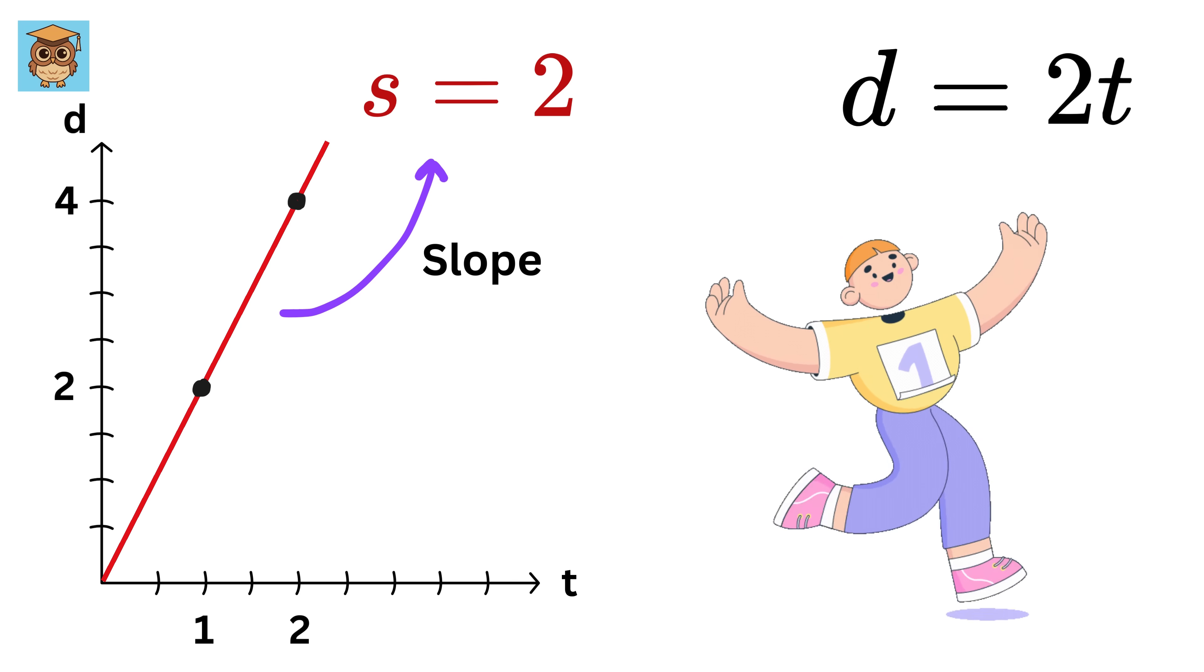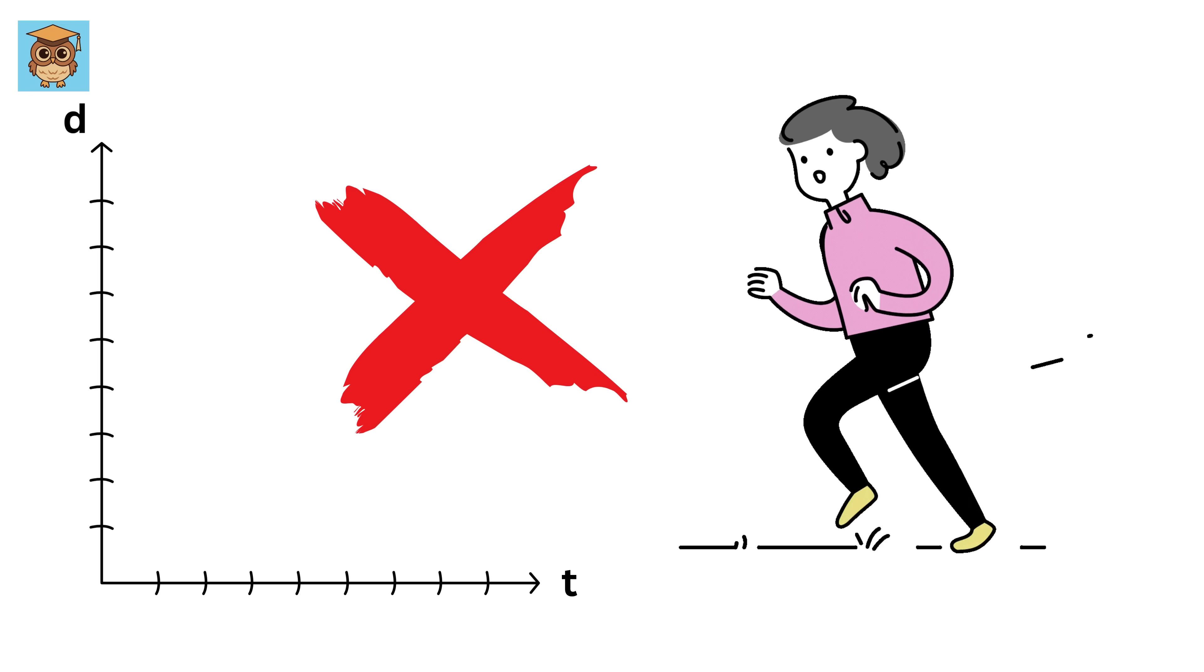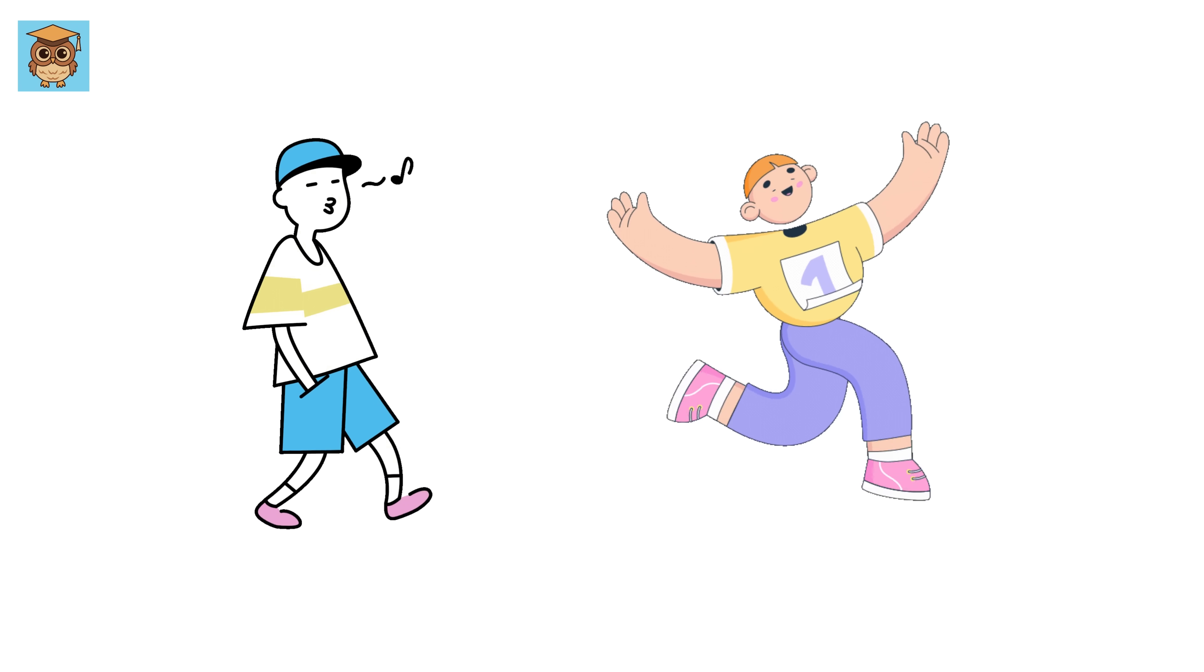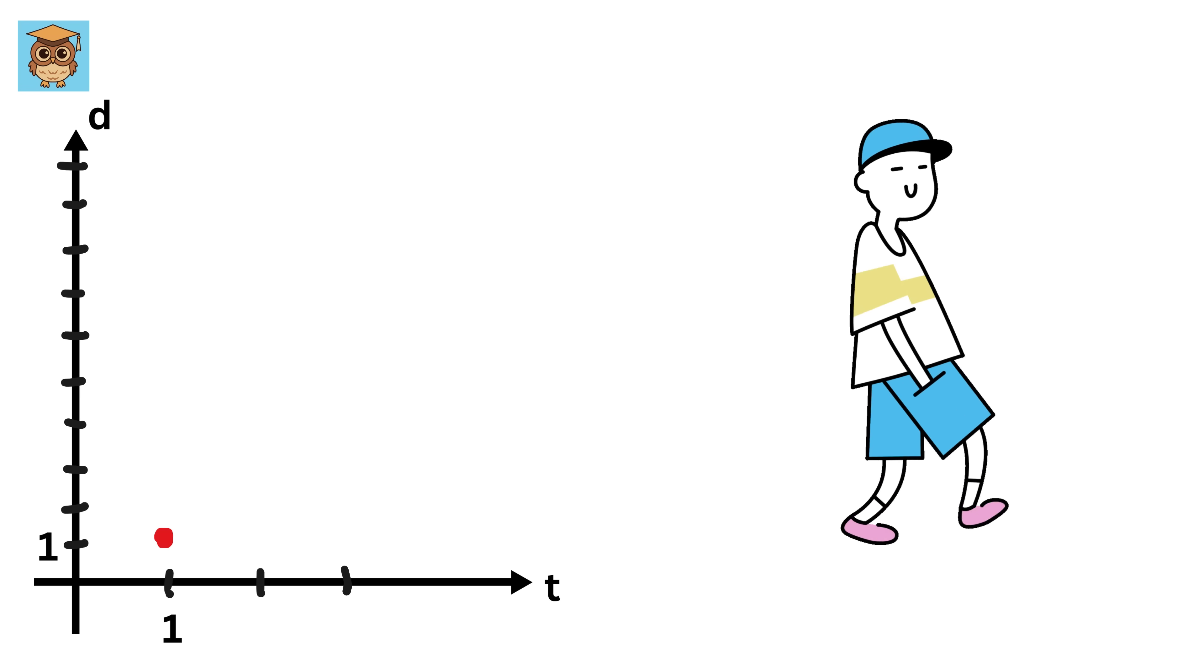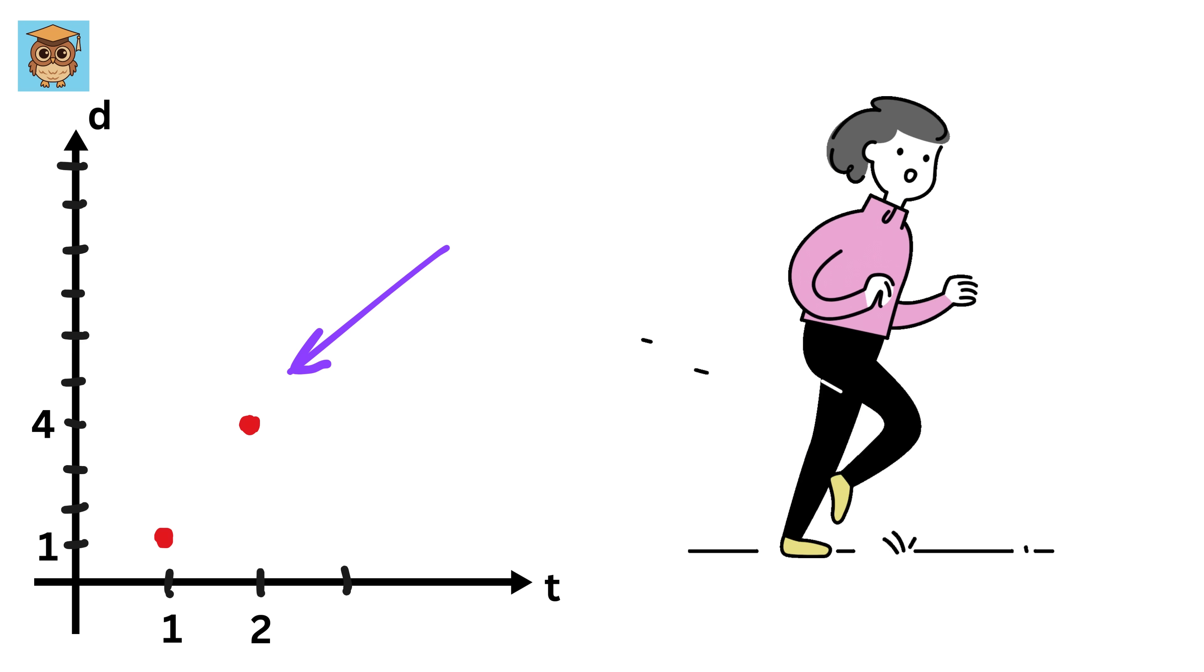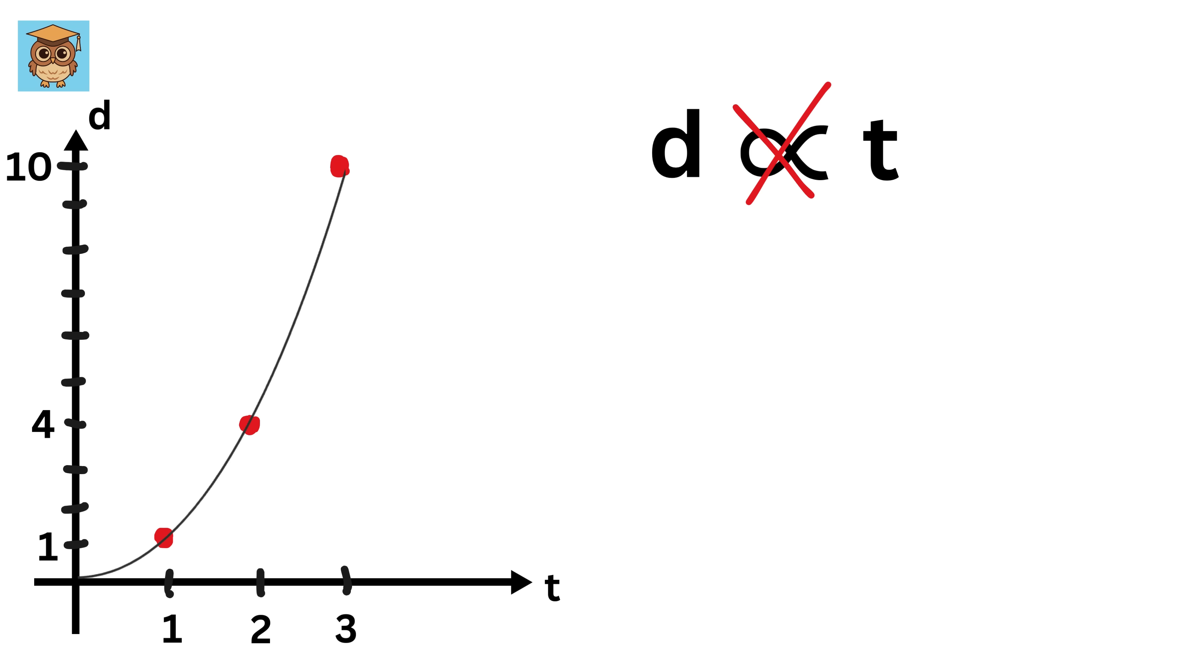But now, assume you start running in a race, and instead of maintaining a constant speed, you begin slowly and then gradually speed up. At first, you might cover only 1 meter in the first second, then 3 meters in the second second, and perhaps 6 meters in the third second. The distance you cover is no longer proportional to time, and the graph of distance versus time will no longer be a straight line. It will be a curve.